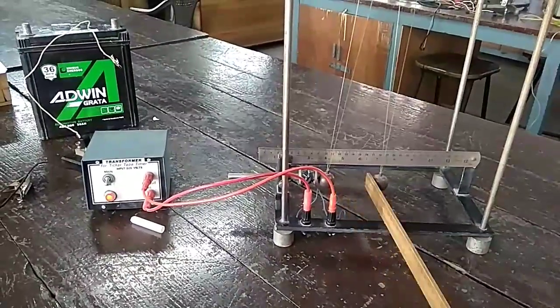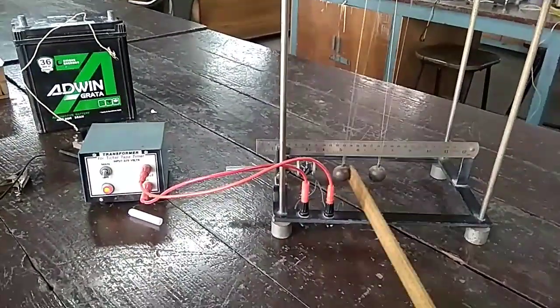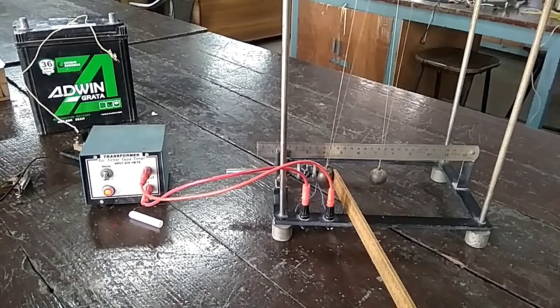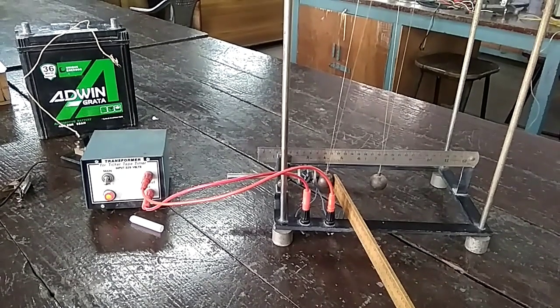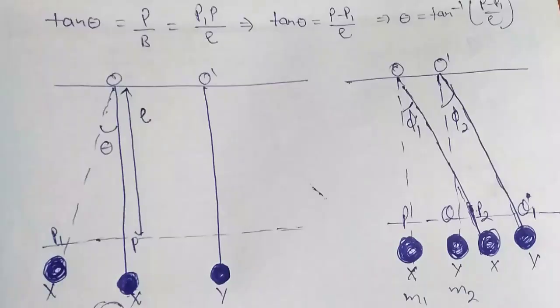Let power supply give current to the solenoid. It becomes a magnet and attracts the ferromagnetic spherical ball of mass m1.